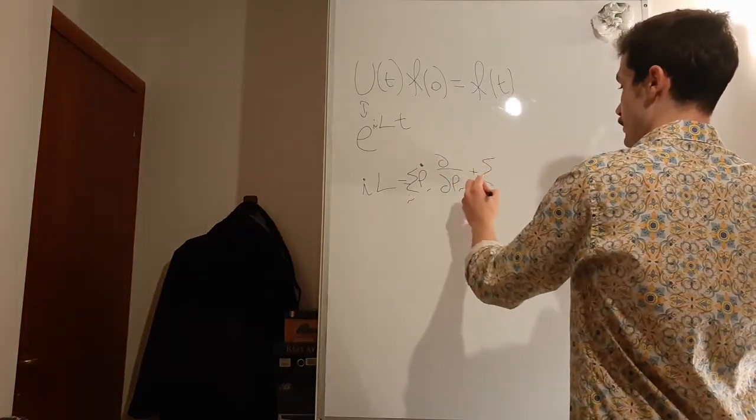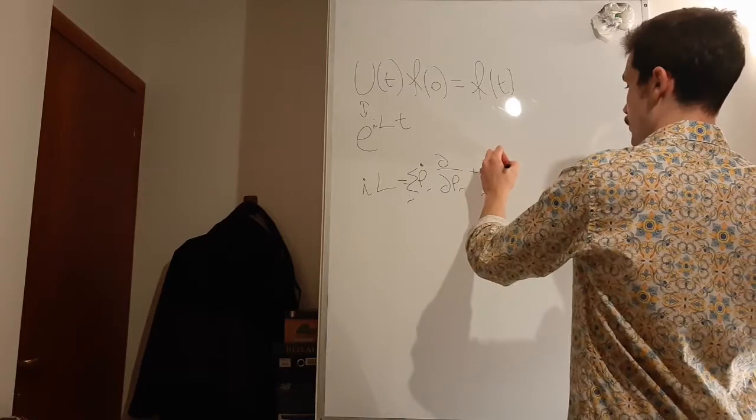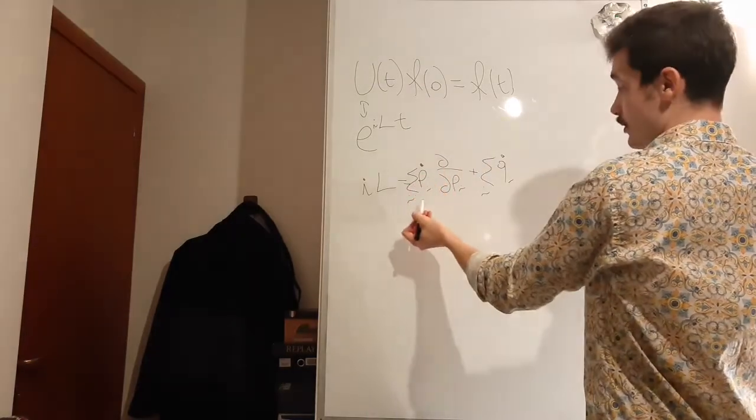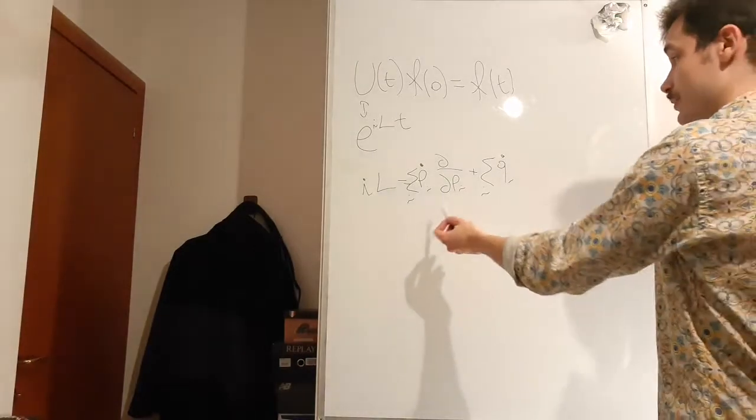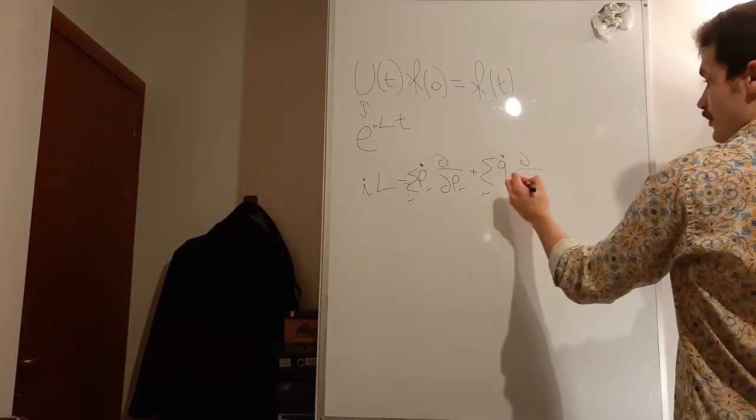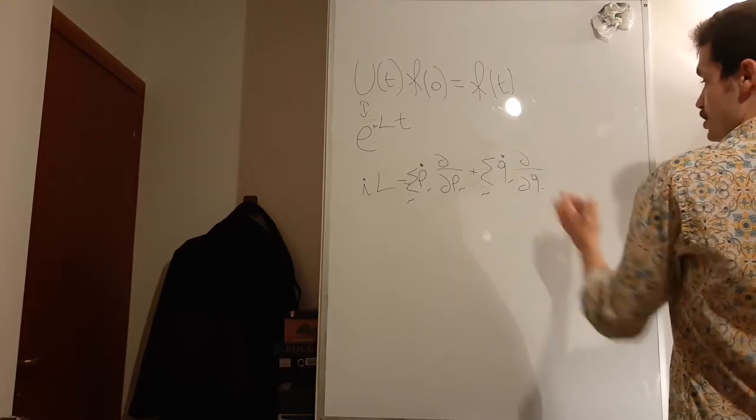Plus the sum over all the degrees of freedom of the positions, of the derivative of the position, and that's the time derivative of the momenta, times the derivative according to the positions.